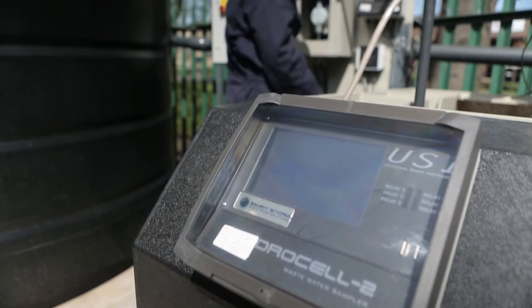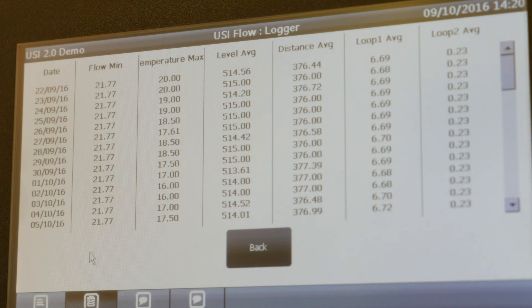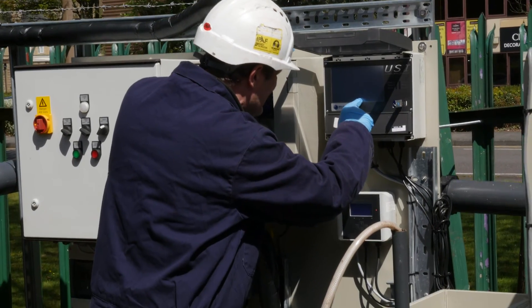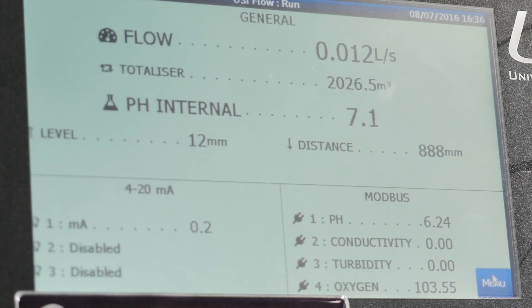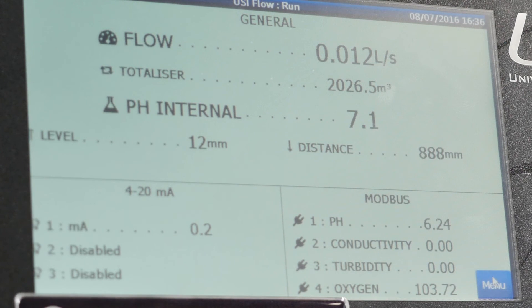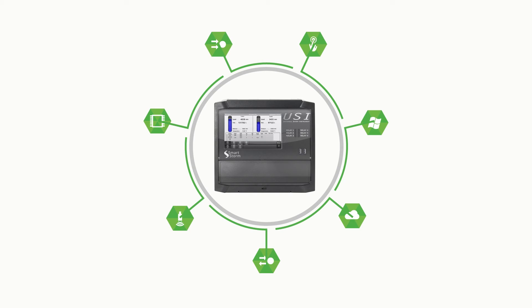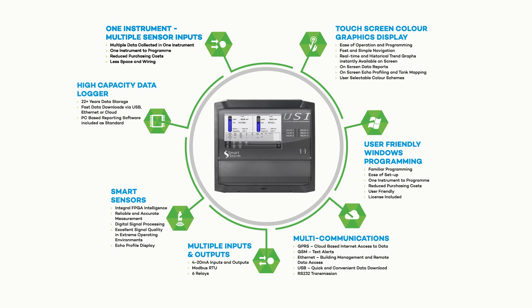The SmartStorm universal smart instrument, the USI, is specifically designed to monitor trade effluent in this way and is the only instrument on the market capable of monitoring multiple parameters in a single instrument. As such, the USI supersedes everything before it and is now the market leader in terms of its user-friendly graphical interface, wide functionality, powerful processing, and multi-parameter measurement.